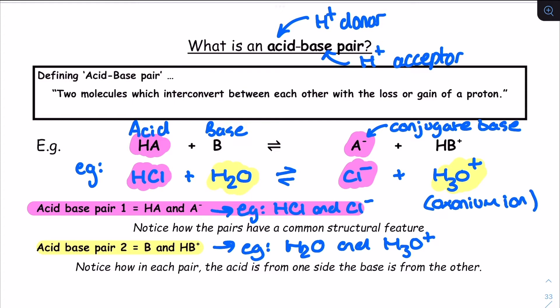Once we identify the pairs, we call one pair, pair one, and the other, pair two. The numbers actually don't matter. Just remember, acid one and base one are a pair, and acid two and base two are a pair. Which one you decide is pair one, and which one you decide is pair two, is not important.